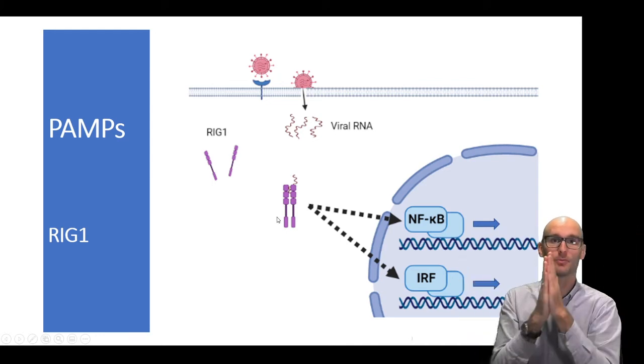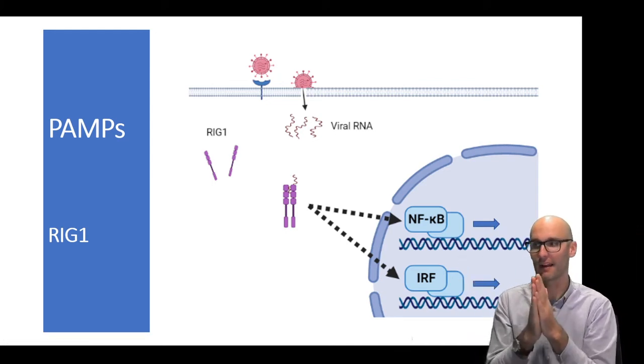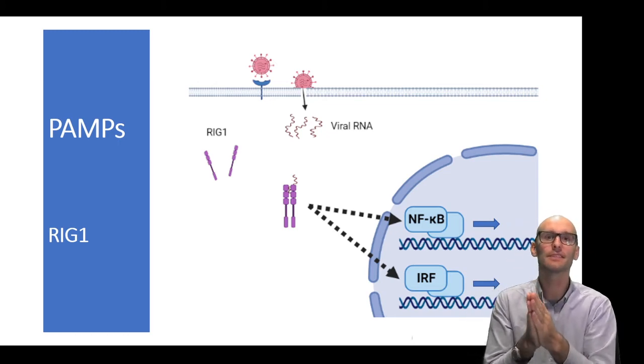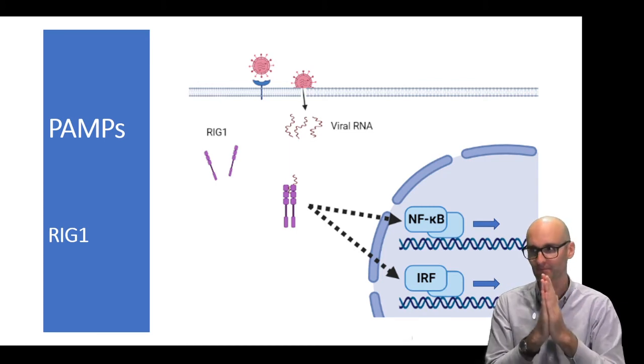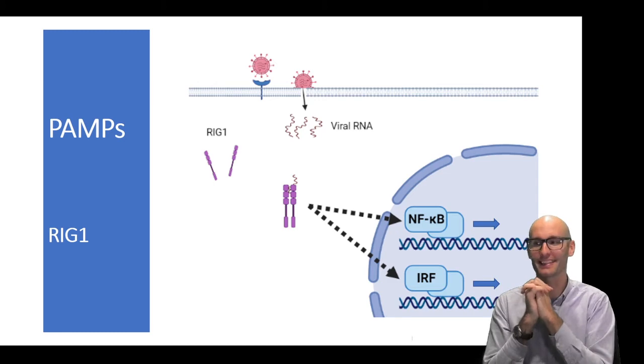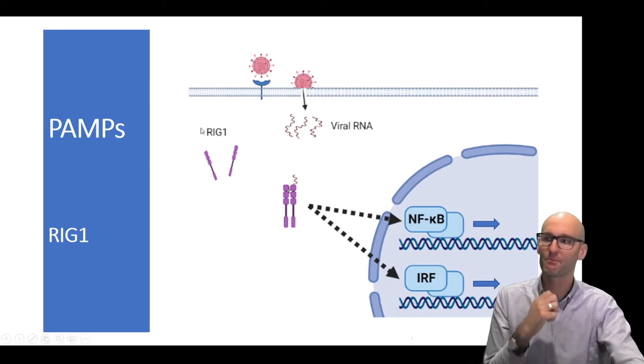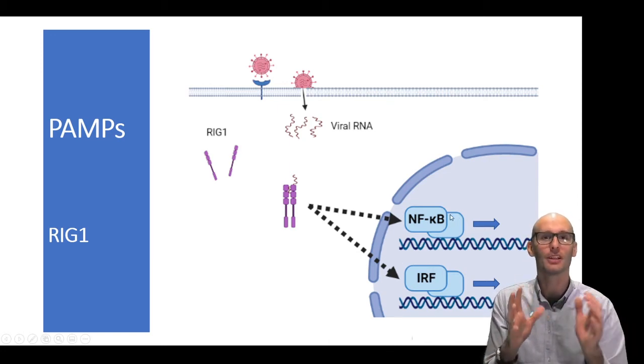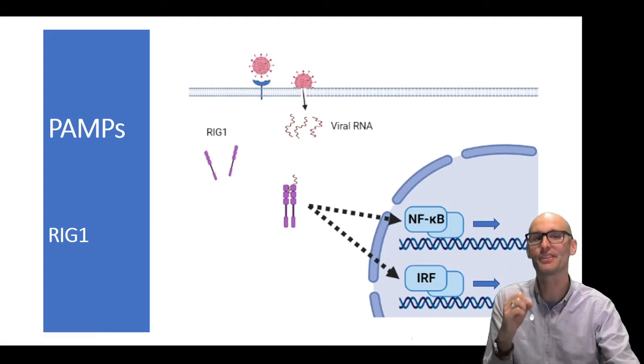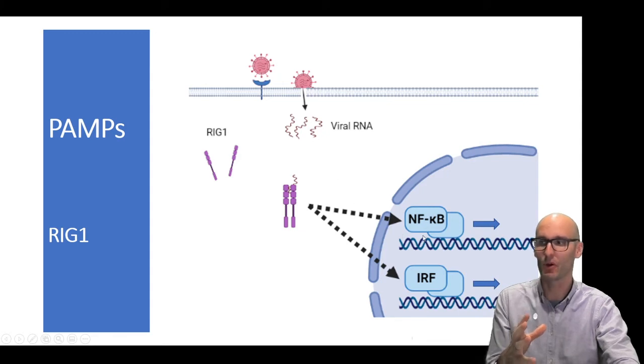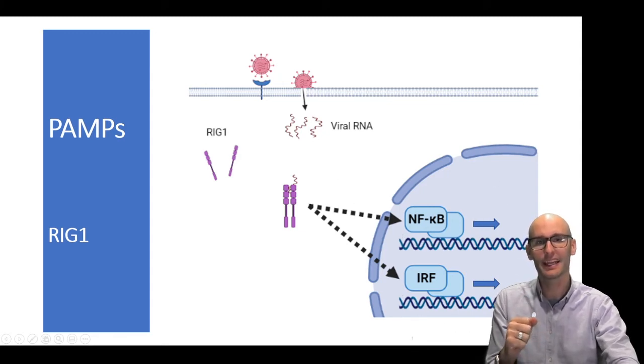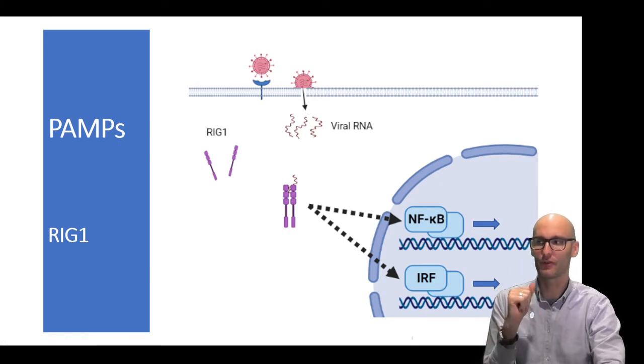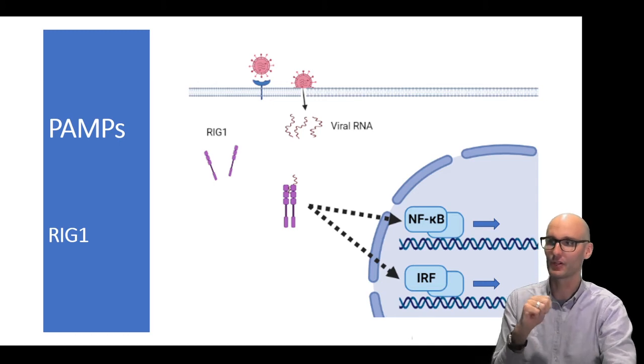RIG1 normally floats around in a monomer form, and it forms a dimer as they both bind to the viral RNA. This again requires unique nucleotide sequences that are often found in viruses and aren't found in our genome. When it dimerizes, it causes a phosphorylation cascade that activates a number of transcription factors. We've got NF-kB and IRF, which will induce interferon responses, and NF-kB will induce cytokines, prostaglandins, and other genes involved in the immune response. Here we're going to get an inflammatory response, and here we're going to get an interferon response. Right now we're just dealing with sensing SARS-CoV-2.